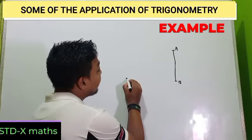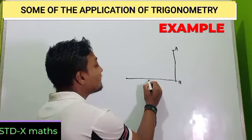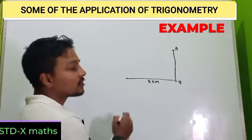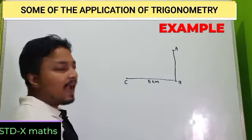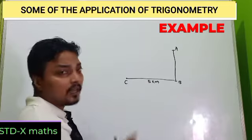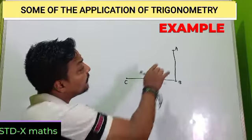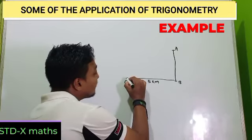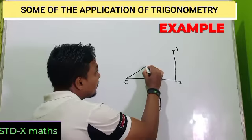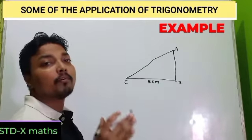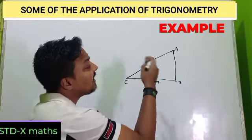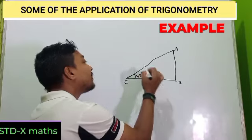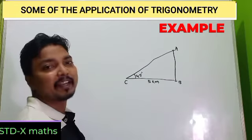The foot of the mountain is here, and this is your position — 5 km away. Suppose your position is C. And whenever you are watching the top of the mountain with an angle of 45 degrees, how can you find out the height of the mountain?